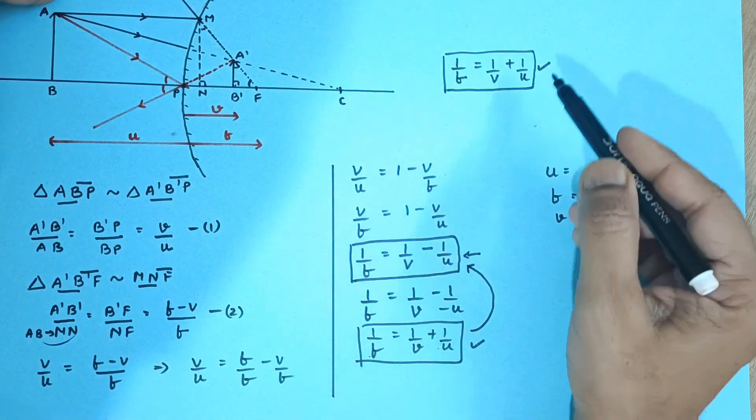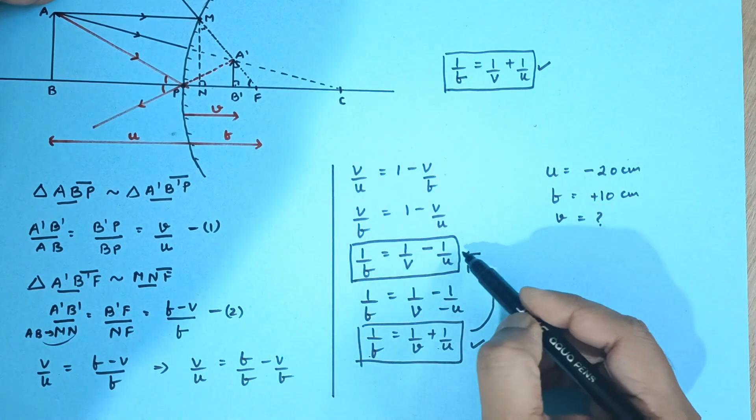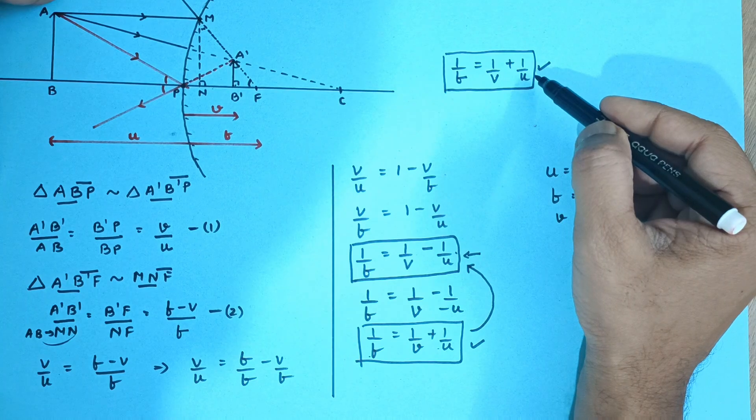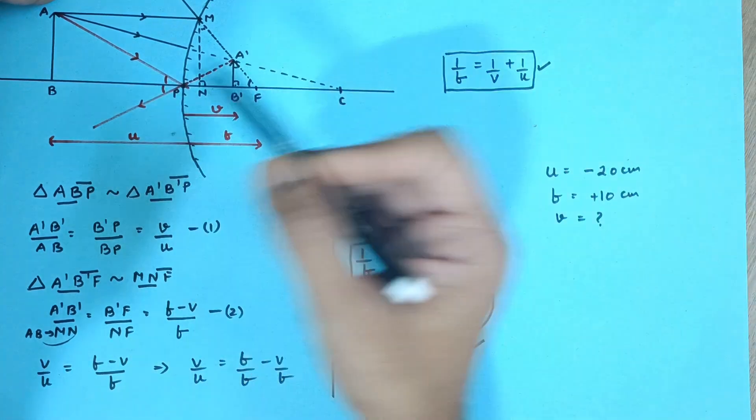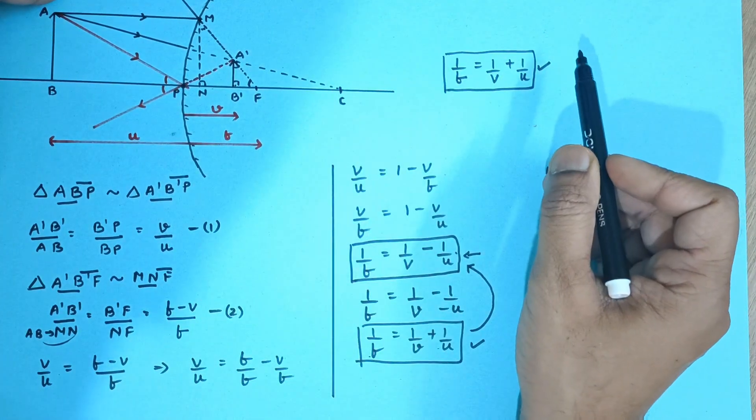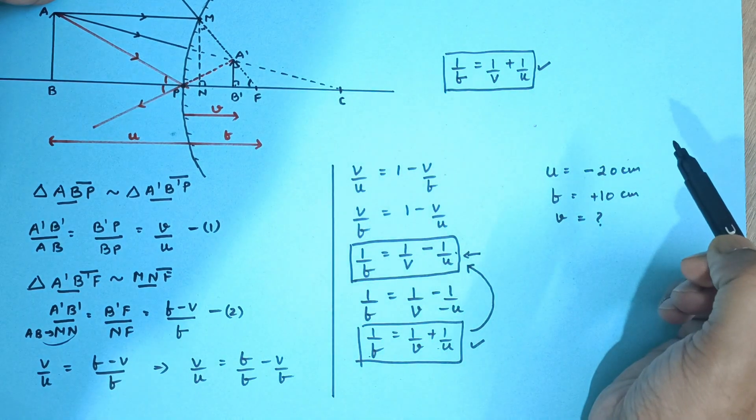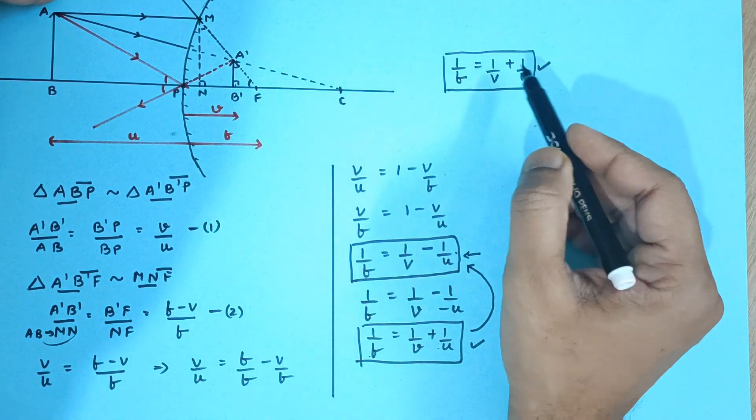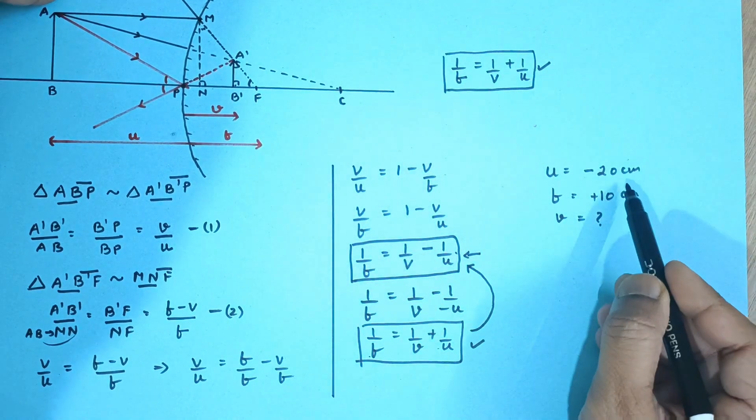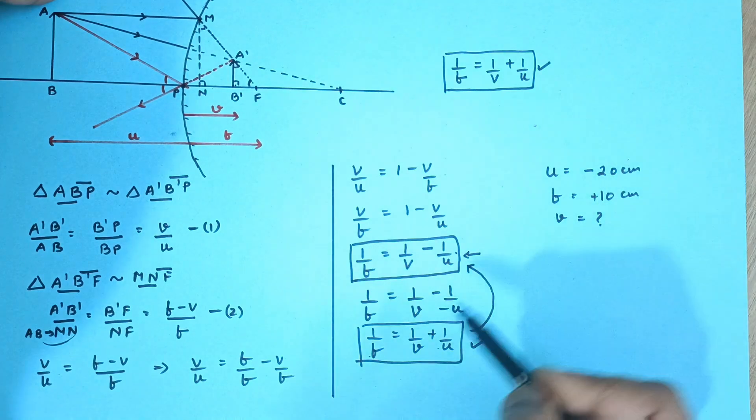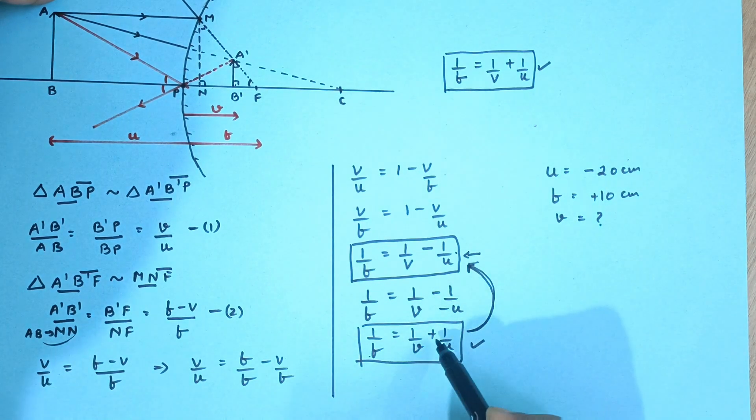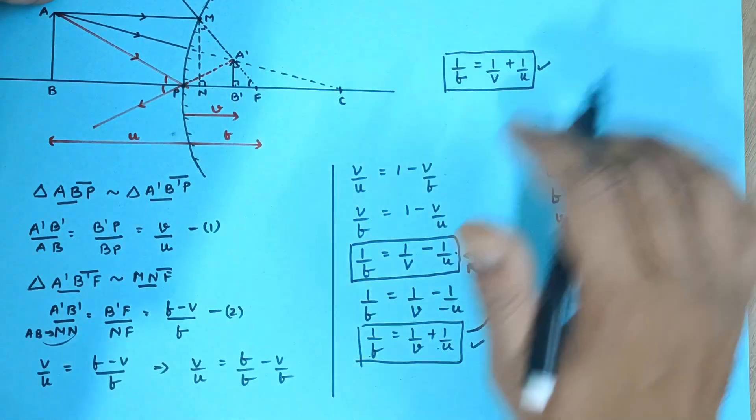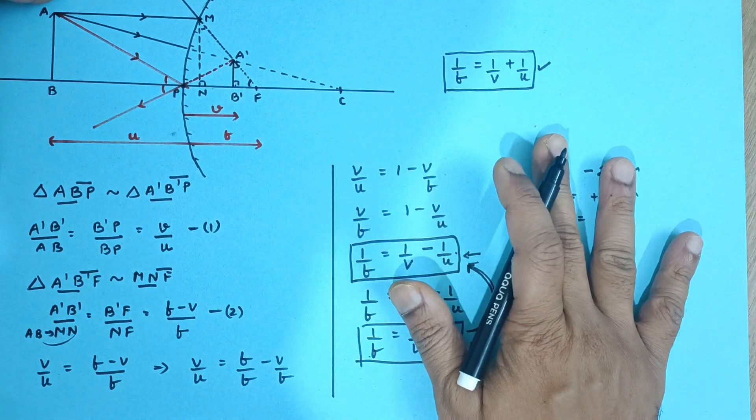Otherwise, what will happen is I will have to remember this formula separately and this formula separately. And that doesn't make sense because in the concave mirror, you will have to remember five to six formulas for each given cases. Instead, what we do is we apply sign convention once and then when we apply the sign convention second time while solving the numerical, this formula converts back into its original formula. So we do not have to remember too many formulas. That is the advantage.